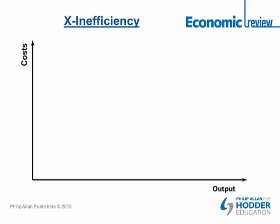We're going to explain X-inefficiency using an average total cost curve. You can see the axes on the diagram — traditionally with a cost curve, we've got output on the X-axis and costs on the Y-axis.